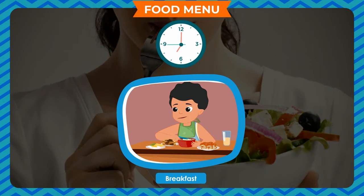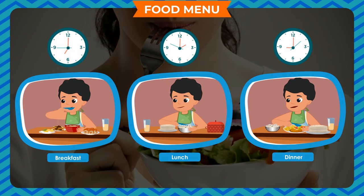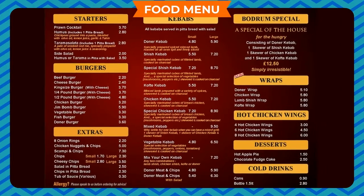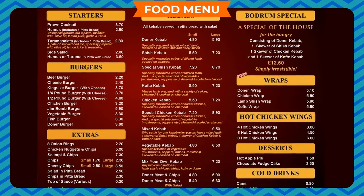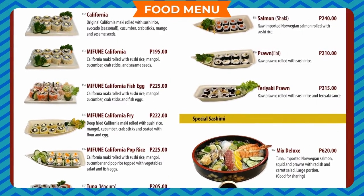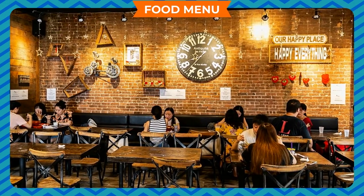Food menu: Generally we eat our meals three times a day — breakfast in the morning, lunch in the afternoon, and dinner at night. We eat different food items in each meal. If we make a list of all food items that we eat throughout the day, this list of different food items is called a food menu. Generally when we go to a restaurant, we order from a food menu.